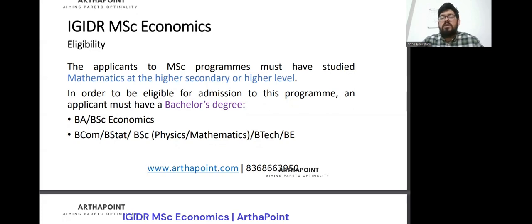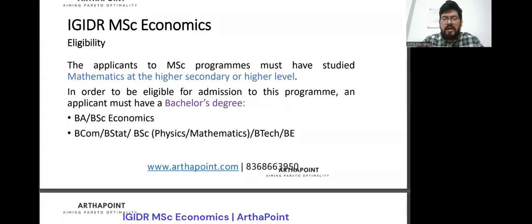Next is from which domain you come from in your undergrad. Like most entrances nowadays, they are pretty much open for all students coming from any stream. It's no more a hard and fast rule that you need to have a bachelor's degree in economics only. In order to be eligible for admission at IGIDR, you need to have a bachelor's degree in BA or BSc Economics, but you can also have BCom, Stats, Physics, Maths, BTech, and BE. So that is pretty much open for all students who want to pursue master's in Economics from IGIDR.